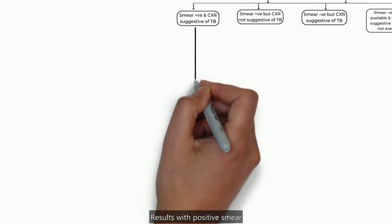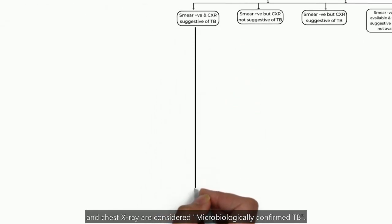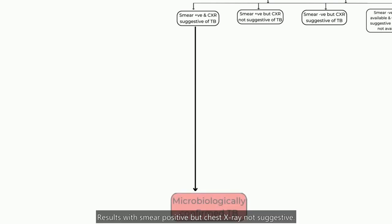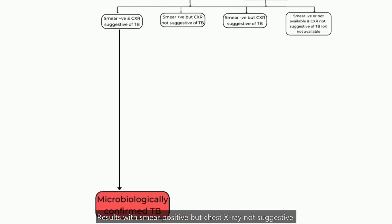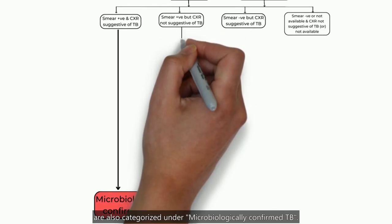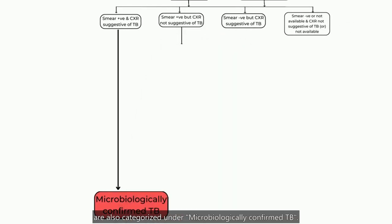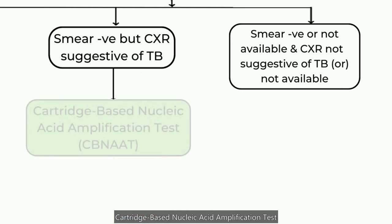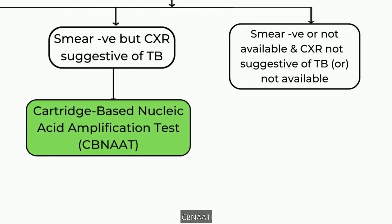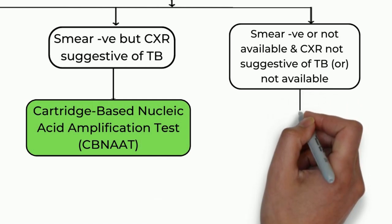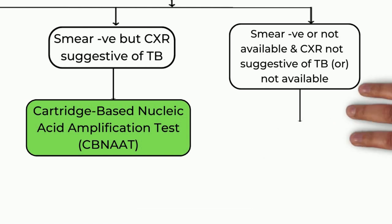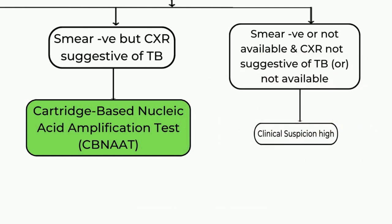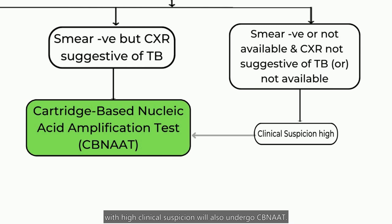Results with positive smear and chest X-ray are considered microbiologically confirmed TB. Results with smear positive but chest X-ray not suggestive are also categorized under microbiologically confirmed TB. Results with smear negative but chest X-ray suggestive of TB undergo cartridge-based nucleic acid amplification test, CBNAAT. Results with smear negative or not available and chest X-ray not suggestive of TB or not available, with high clinical suspicion, will also undergo CBNAAT.